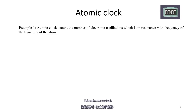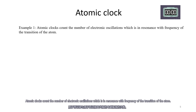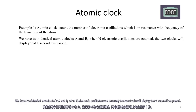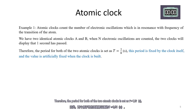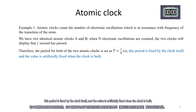This is the atomic clock. Atomic clocks count the number of electronic oscillations that are in resonance with the frequency of the atomic transition. For two identical atomic clocks A and B, when n electronic oscillations are counted, the two clocks will display that one second has passed. Therefore, the period for both atomic clocks is set as p equal to one divided by n seconds. This period is fixed by the clock itself, and the value is artificially fixed when the clock is built.